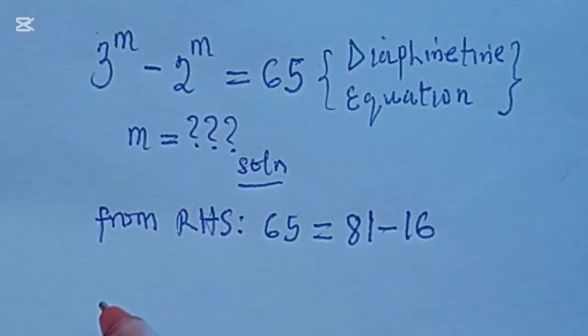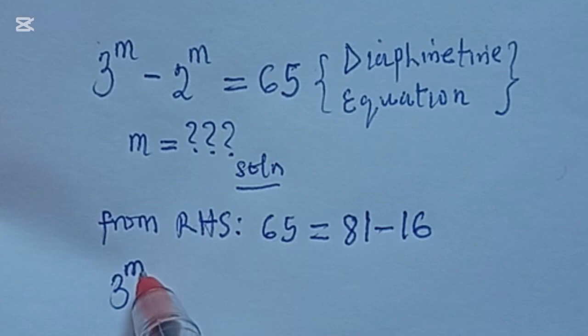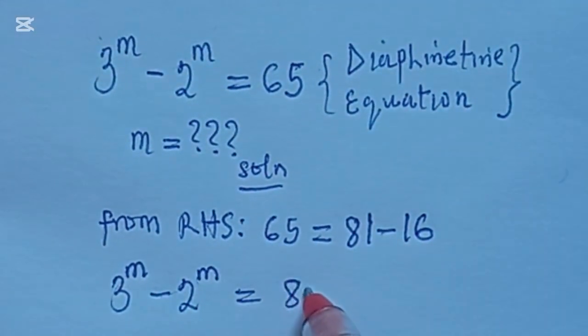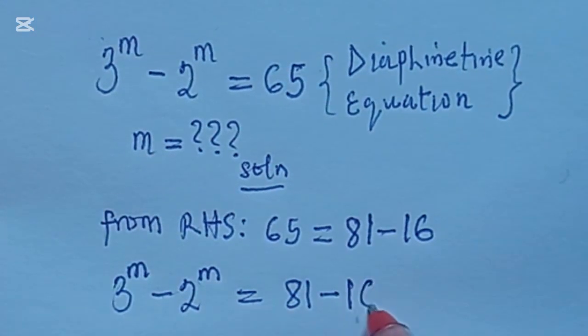Do you agree? Alright, so let's see. So 3 to the power of m minus 2 to the power of m is equal to 81 minus 16, alright?